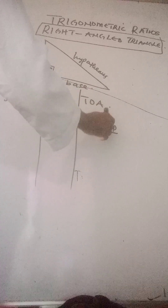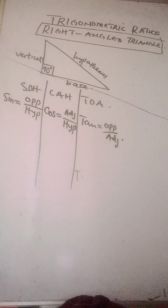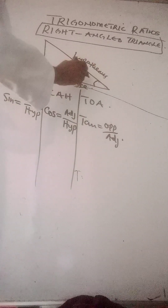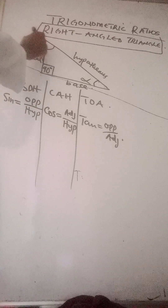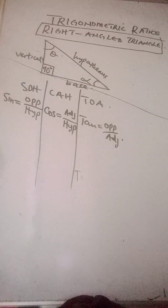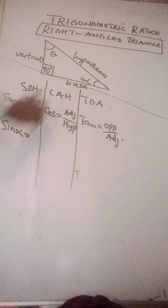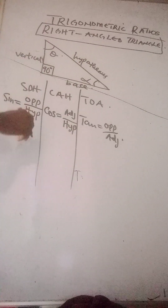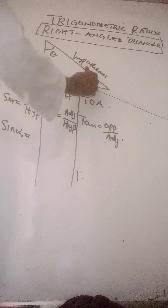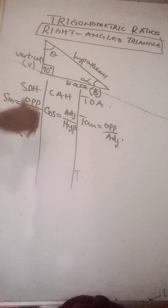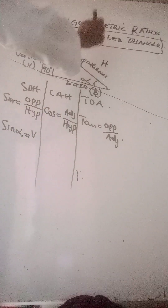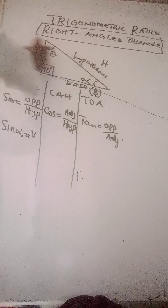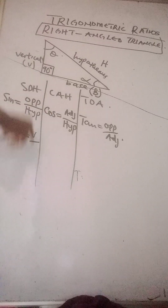Let me label the angles — I'll call this angle alpha and this angle theta. If I'm using alpha, then sine alpha uses this angle. The opposite to alpha will be the vertical side, using V for vertical, B for base, and H for hypotenuse. So sine alpha equals V over H — the side facing alpha is vertical, over hypotenuse H.